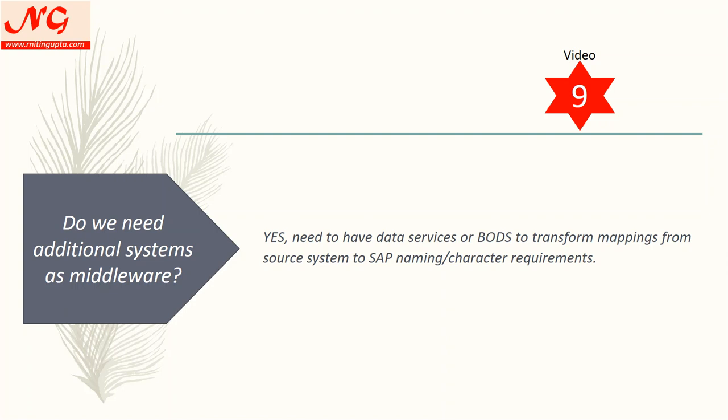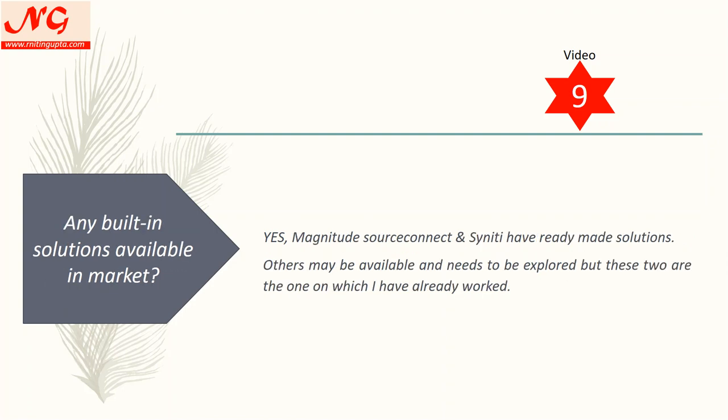SLT will not perform that conversion on its own. So what you do is extract data from Oracle through Data Services or bots, transform the data into the standard SLT format — for example converting 'tax 5%' into V5 — and once you load that into SLT it works in a standard way. That additional system handles the transformation of data that doesn't match SAP standard accounting fields.